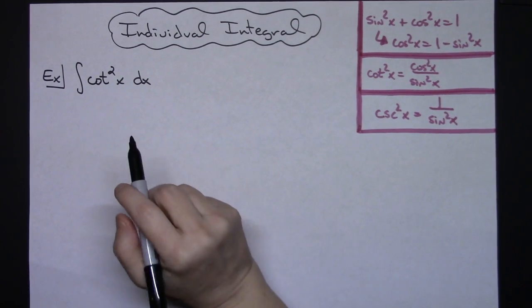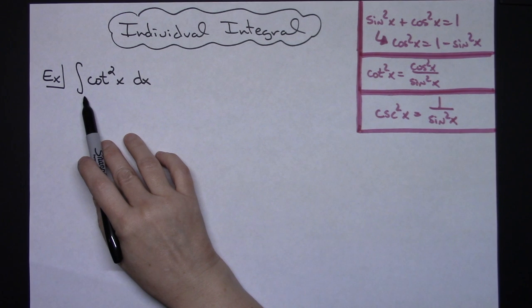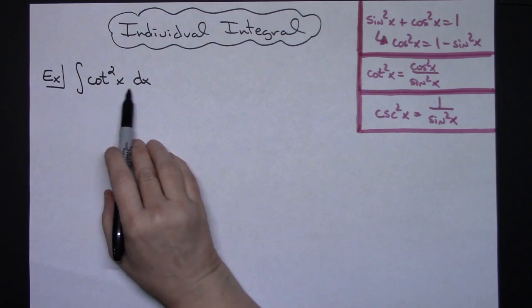In this integral I'm going to be working out an individual integral. I'm going to be looking at the integral of cotangent squared x dx.